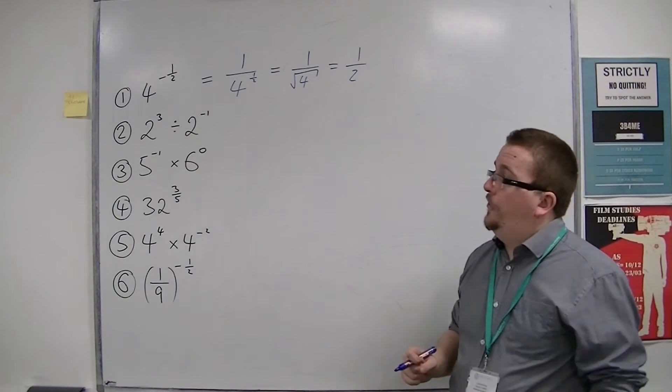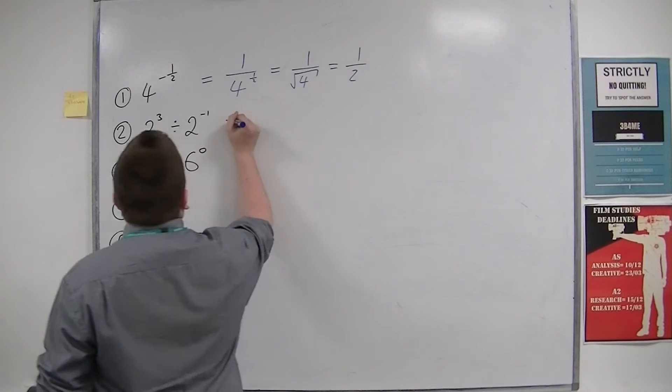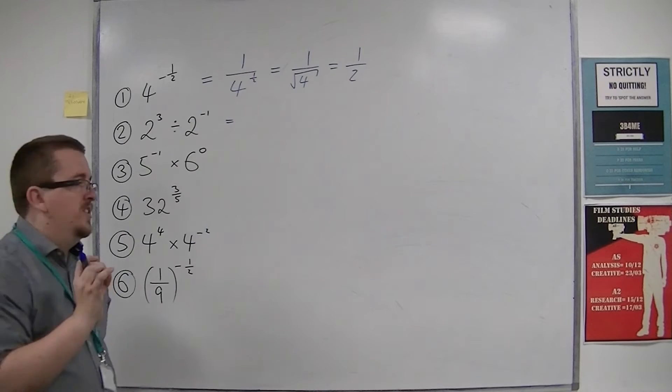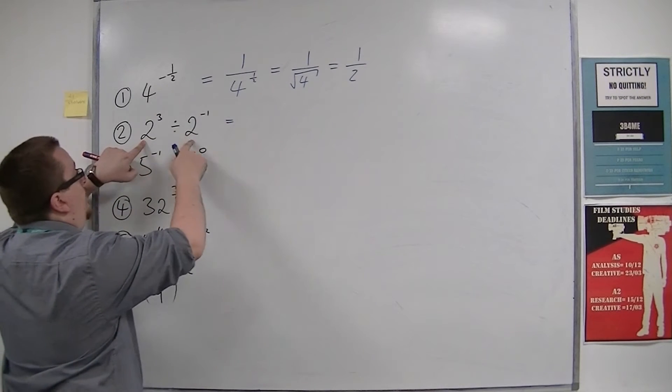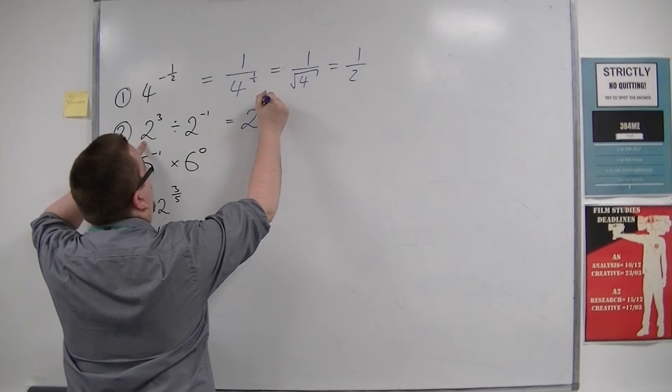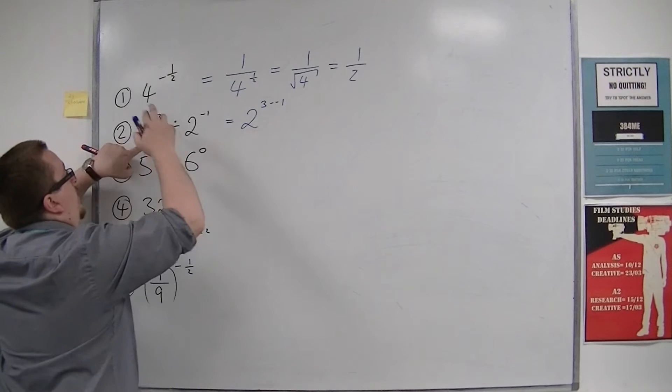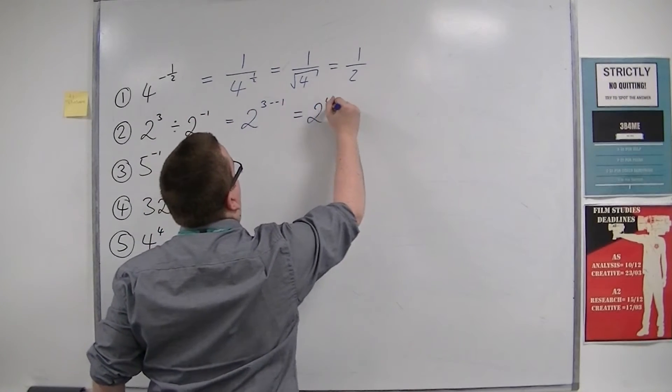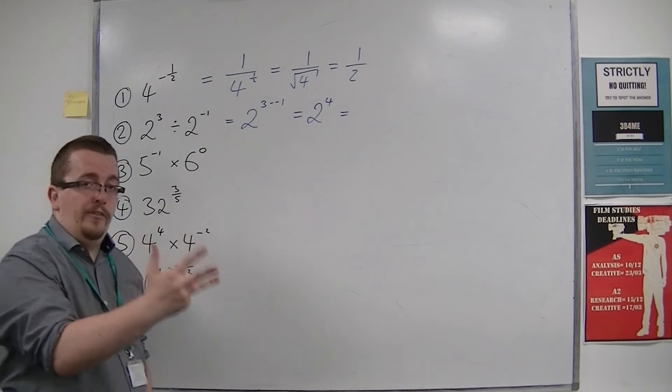We've then got number 2: 2 to the 3 divided by 2 to the minus 1. So using the second law of indices that I showed you in the previous video, because the base number is the same, the 2, then that means that we have 2 to the power of 3 take away the minus 1. So 2 to the power of 3 take away the minus 1, so that's 2 to the power of 4. So 2 to the power of 4: 2, 4, 8, 16.